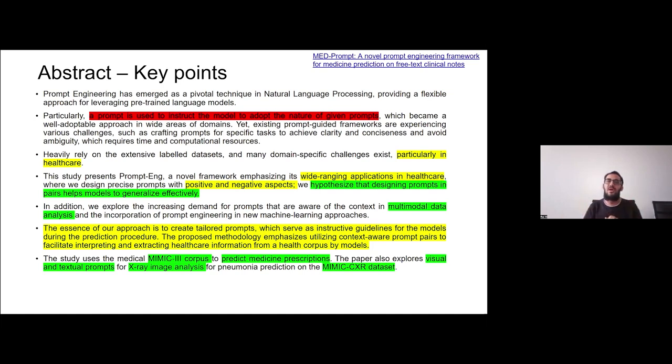We hypothesize that designing prompts in pairs, like when I will give prompt to the model, whether this chest x-ray has pneumonia classification or not, whether this has something or not, or predict the medicine for the patient. So in that case, I will prompt the model with a positive prompt and also with a negative prompt. And we hypothesized this initially, and then later on, it also proves that the prompt pair actually helps model to realize or generalize effectively.